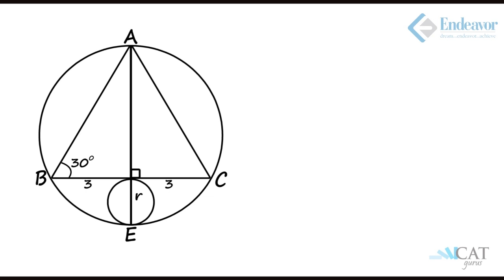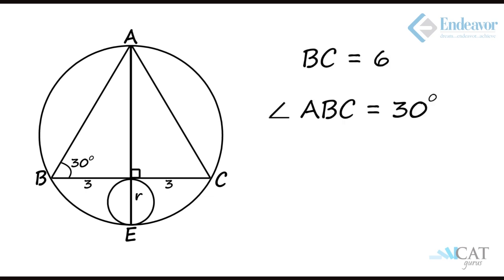The base side of the isosceles triangle is given to us as 6 and the base angle is 30 degrees. There is another small circle below the base of the isosceles triangle which is touching the midpoint of the isosceles triangle and at the same time it is touching the bigger circle. We are supposed to find out the radius of the smaller circle.